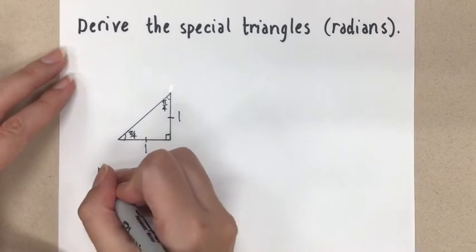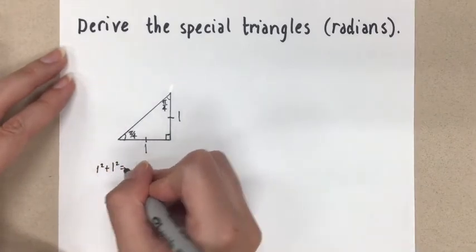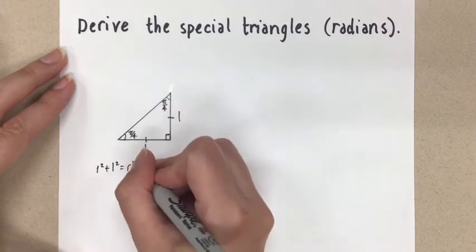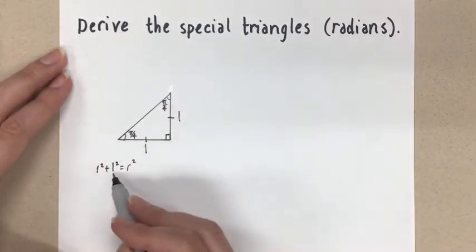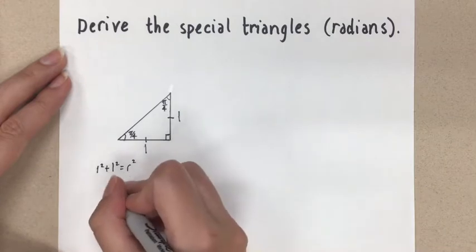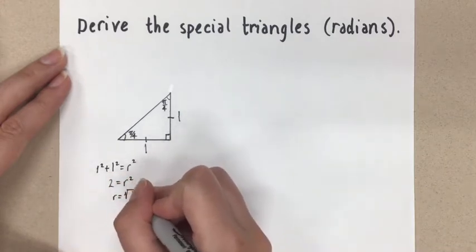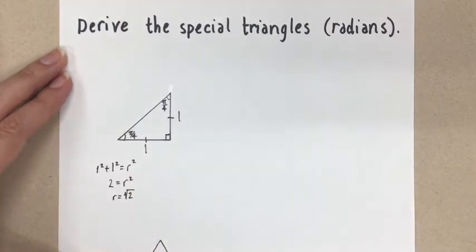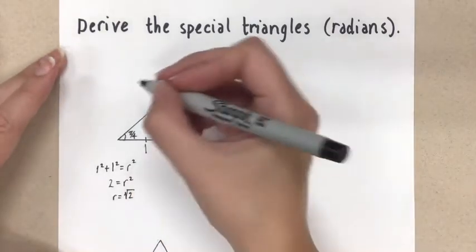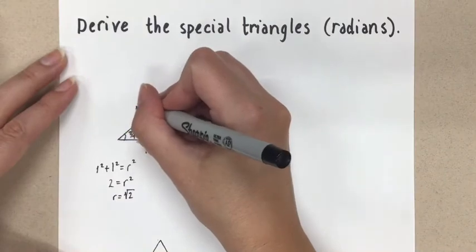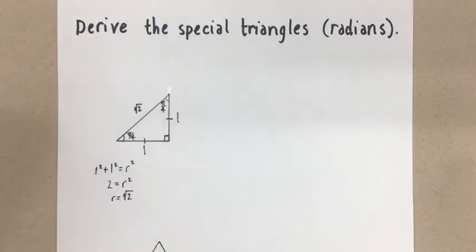To find the side length on the hypotenuse, we can use the Pythagorean theorem. So let's do that quickly. 1 squared plus 1 squared is going to give us — let's call that r squared. 1 squared is 1, 1 squared is 1, add them together and we get 2. So r is going to be root 2. We want the exact value of root 2 there — we're talking about exact values here, not approximated decimals.